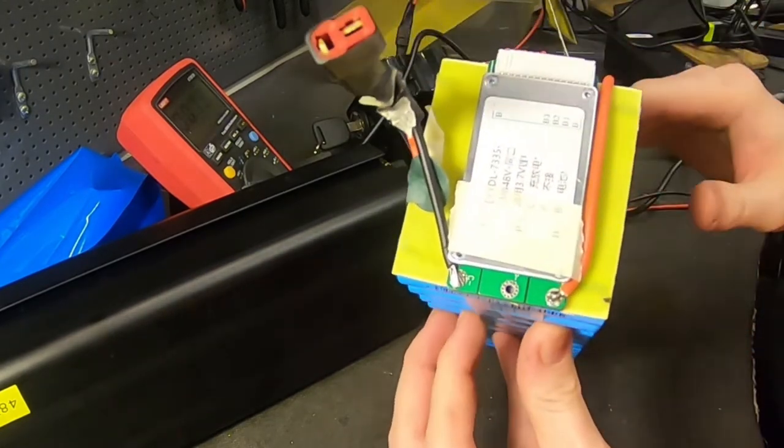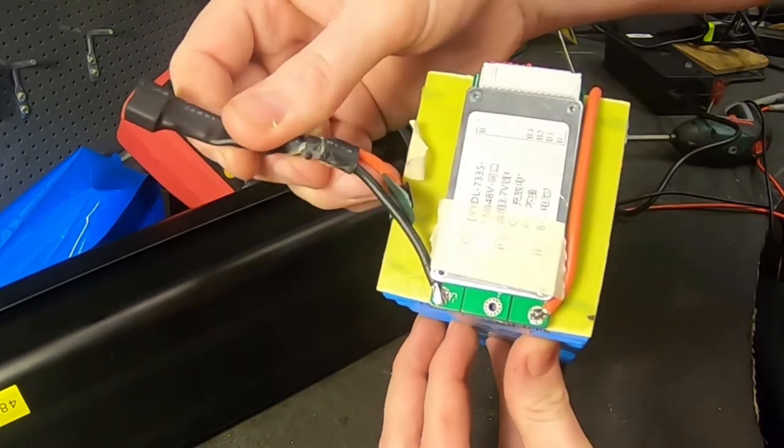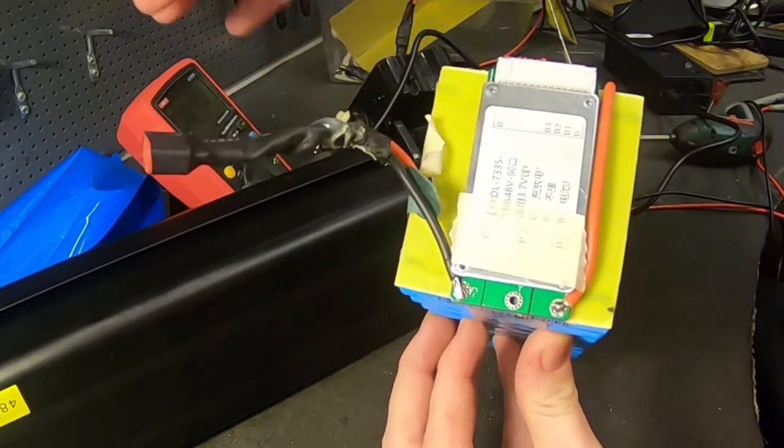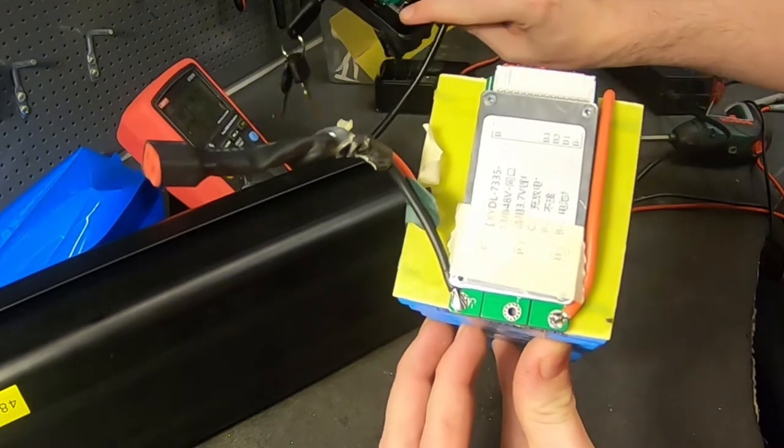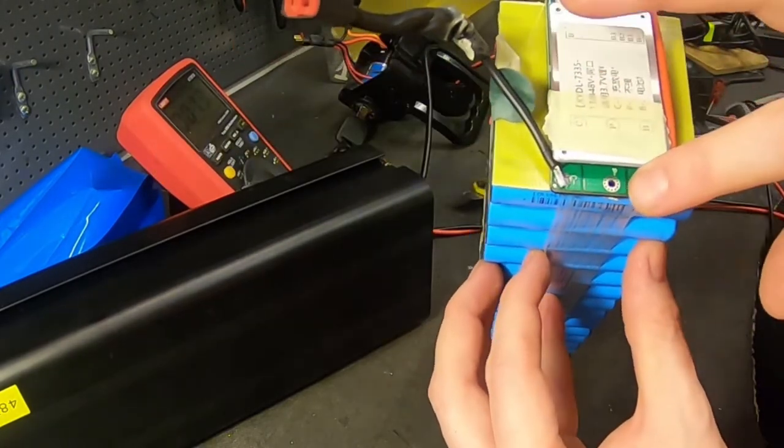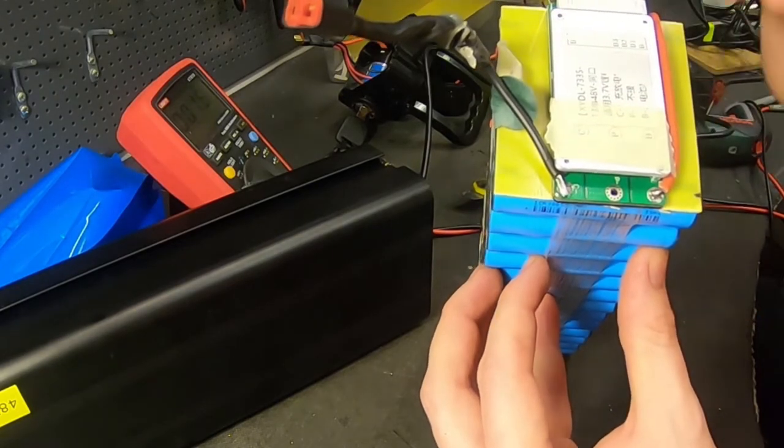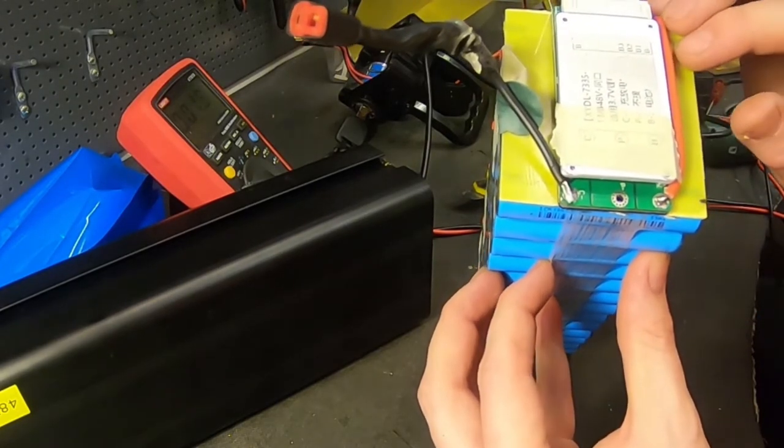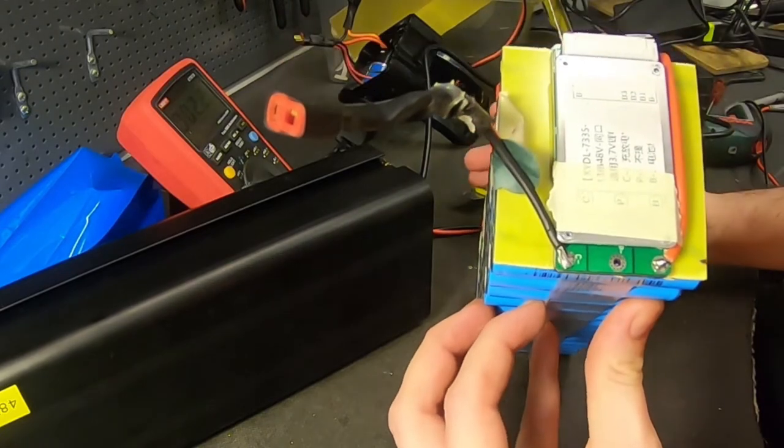Here you can see they have the same port for charging and discharging. This one goes directly to both ports, but they did not connect anything to P minus. This battery has no low voltage protection at all. He can run this battery down to zero volts.